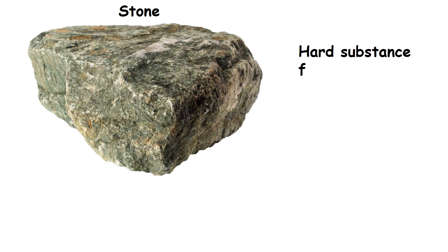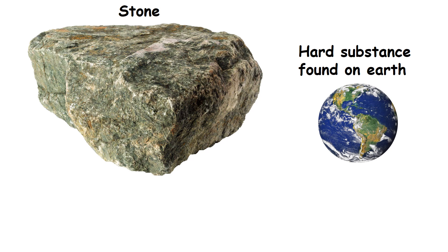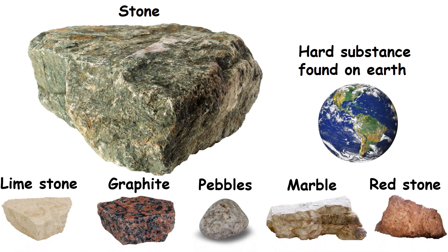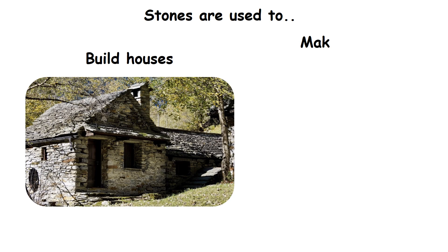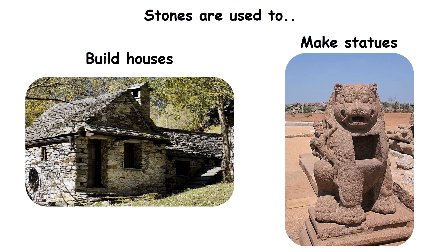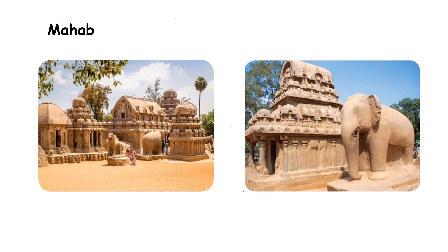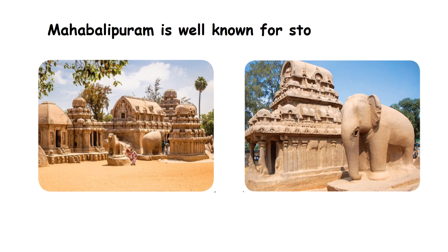Stone. Stone is a hard substance found on the earth. There are many kinds of stones. Stones are used to build houses and to make statues. Mahabalipuram is well known for its stone sculptures.